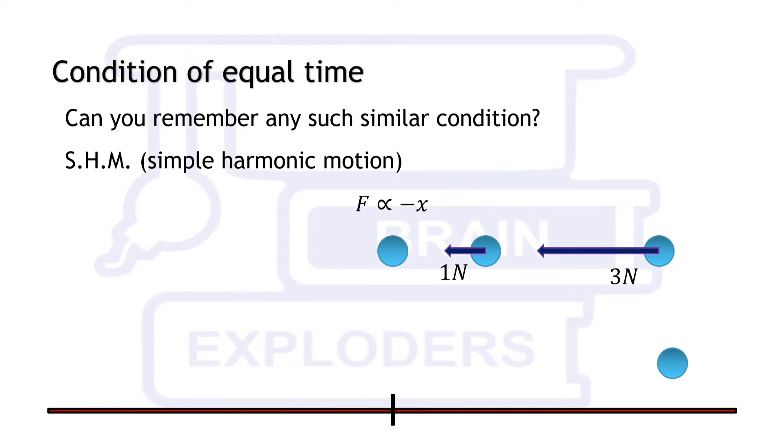What will happen now if we leave the object on this position? Due to the force acting on the object, it starts moving towards its mean position. On reaching its mean position, there is no force acting on it but it has some velocity so it keeps moving.